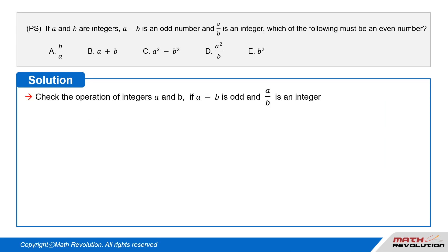Let us check the operation with the integers A and B if A minus B is odd, and A over B is an integer. For A minus B to be odd, one of the two has to be odd, and the other has to be even.